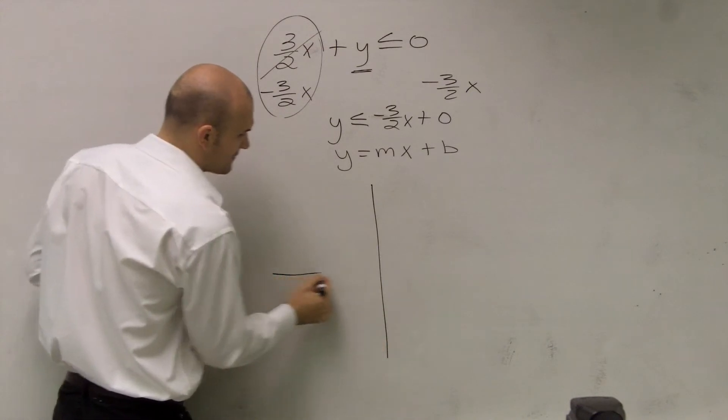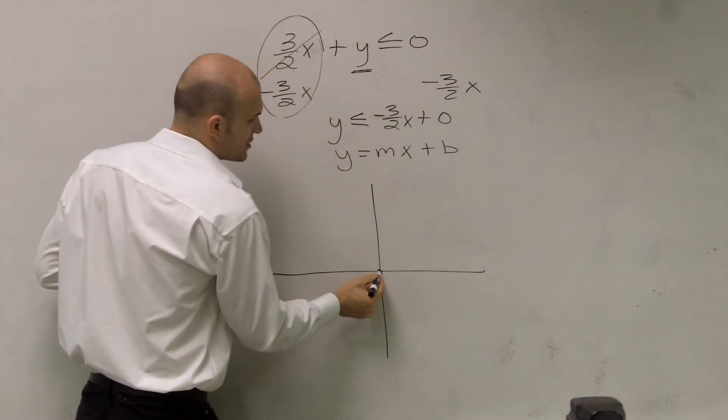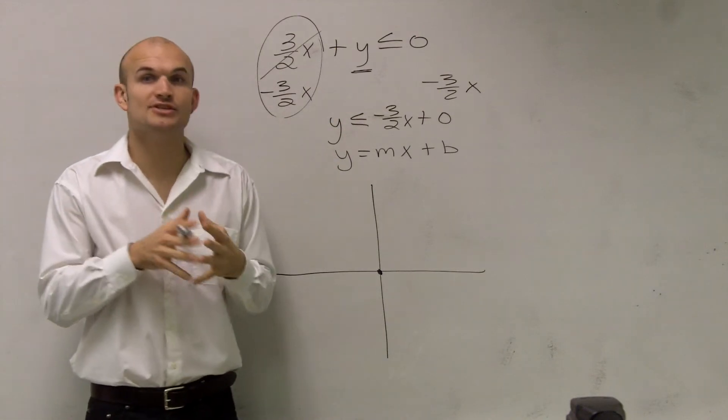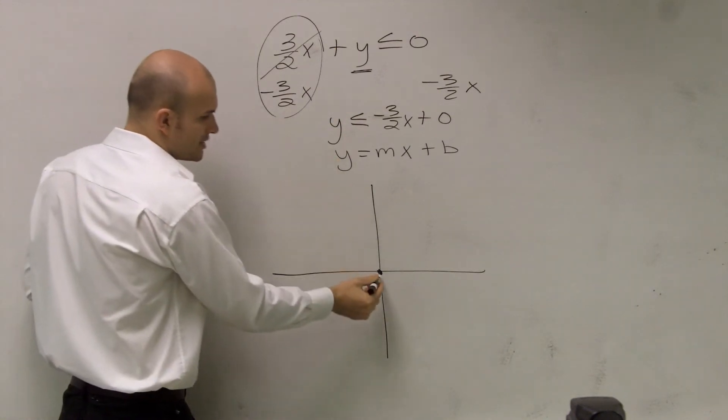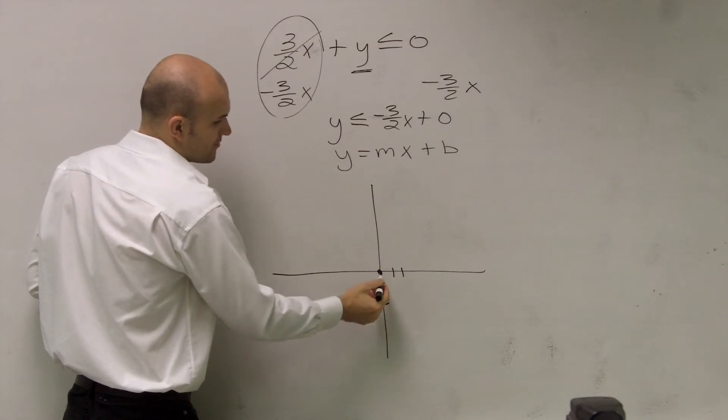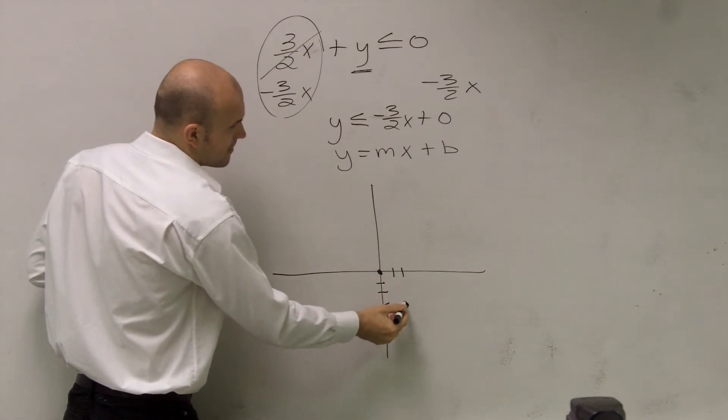So if I was going to graph this, my y intercept is at 0. My slope, remember, slope is your change in y over your change in x. So at this point, I need to go down 3 units and then over 2.